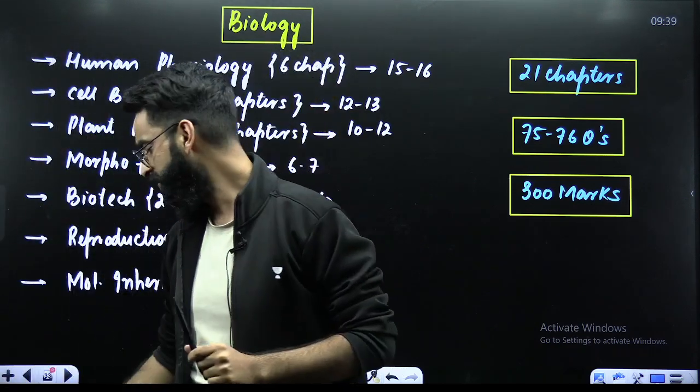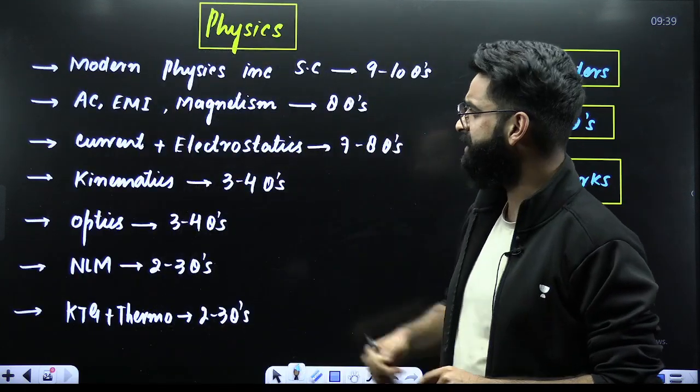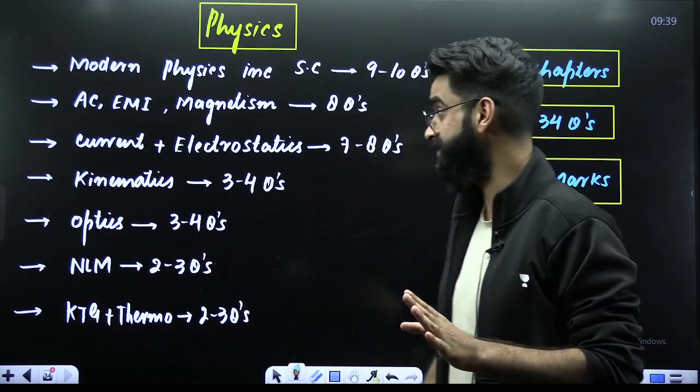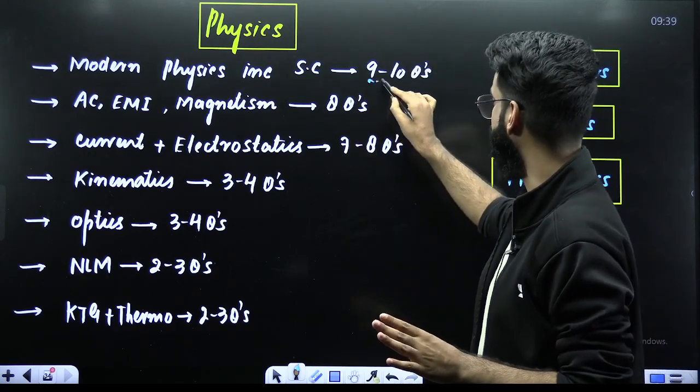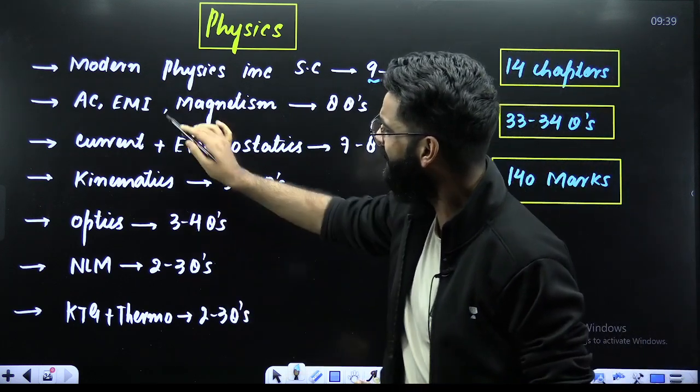When it comes to the subject Physics, which is the awaited one I believe. In your Physics, your Modern Physics including Semiconductors consists of your 9 to 10 questions. AC, EMI, Magnetism, 8 questions. Current Electrostatics, 7 to 8 questions.